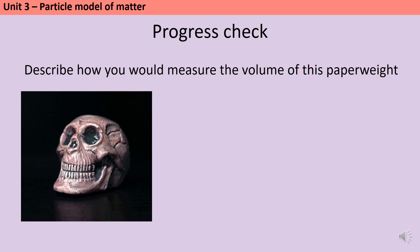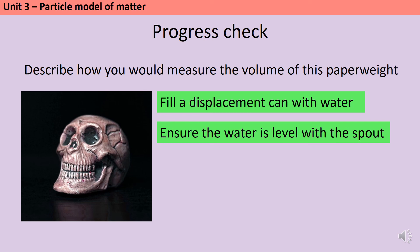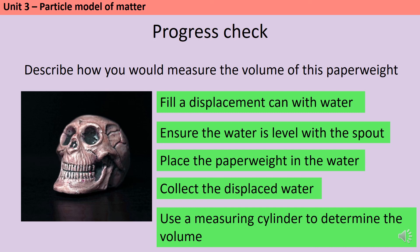It's very common in GCSE science exams for the required practicals to form the basis of four to six mark extended response questions. This is a really good practical for them to ask you to write a method, either a complete method for working out density or a partial method such as how you would measure the volume of a paperweight. Pause the video and see if you can write down the five steps necessary to measure the volume. Firstly, fill a displacement can with water so the water level is in line with the spout. Then place the paperweight into the water so it displaces water, and collect that displaced water. Finally, use a measuring cylinder to determine the volume of the water, which equals the volume of the paperweight.